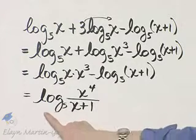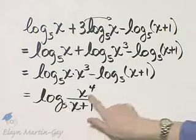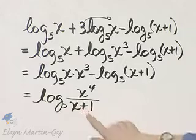So as a single logarithm, this is log base 5, x to the fourth over x plus one.